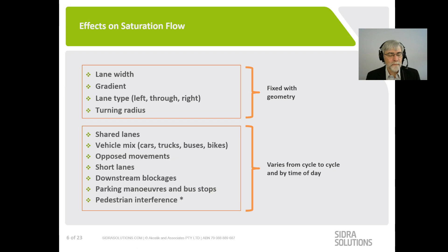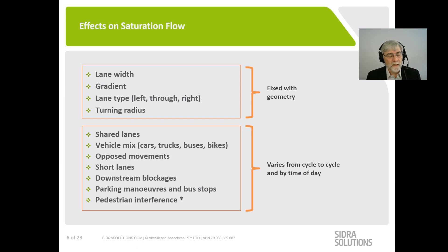Parking manoeuvres upstream of the stop line, or buses stopping upstream of the stop line, will also affect the average saturation flow across the hour, even though they might only happen in a few cycles during the analysis period. Pedestrian interference is another factor that affects real-world saturation flow, but is dealt with differently within SIDRA — either by reducing the saturation flow or by default reducing the effective green time. That adds another complexity.